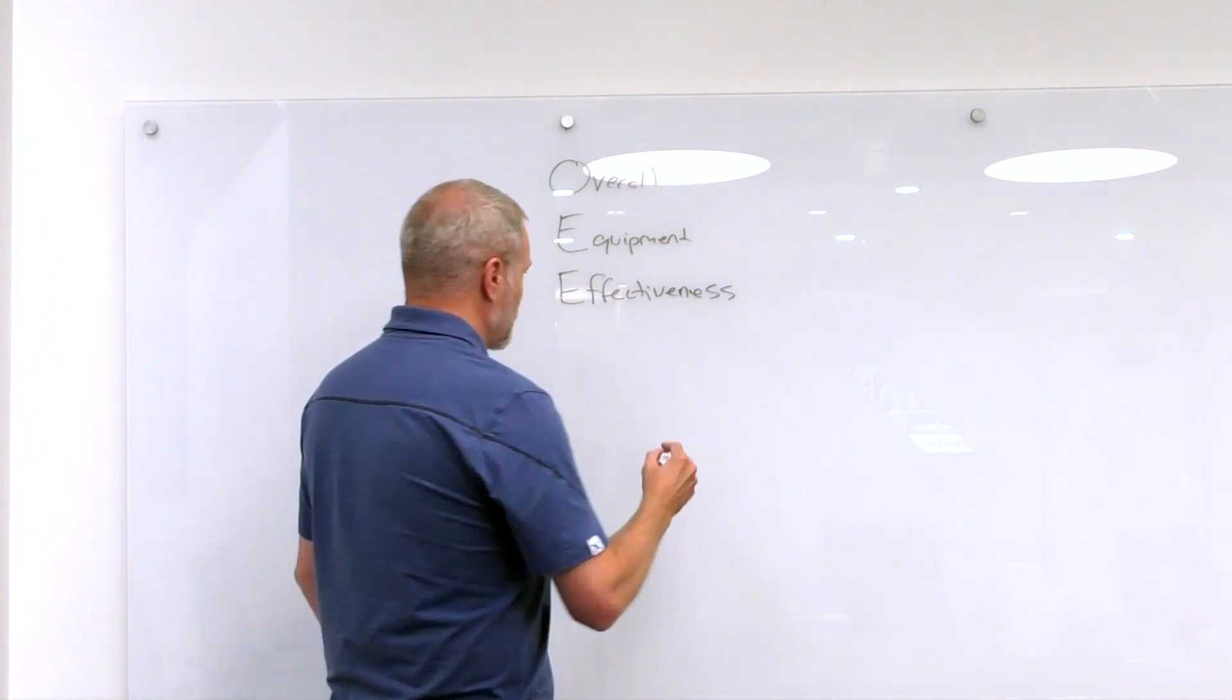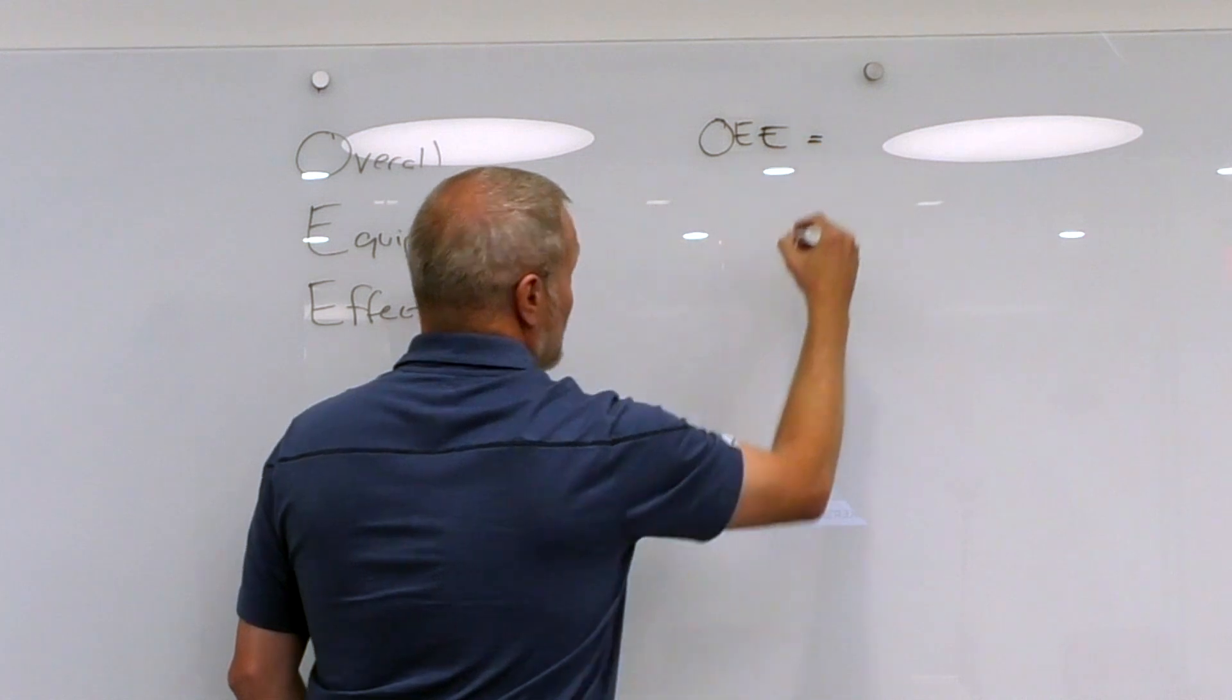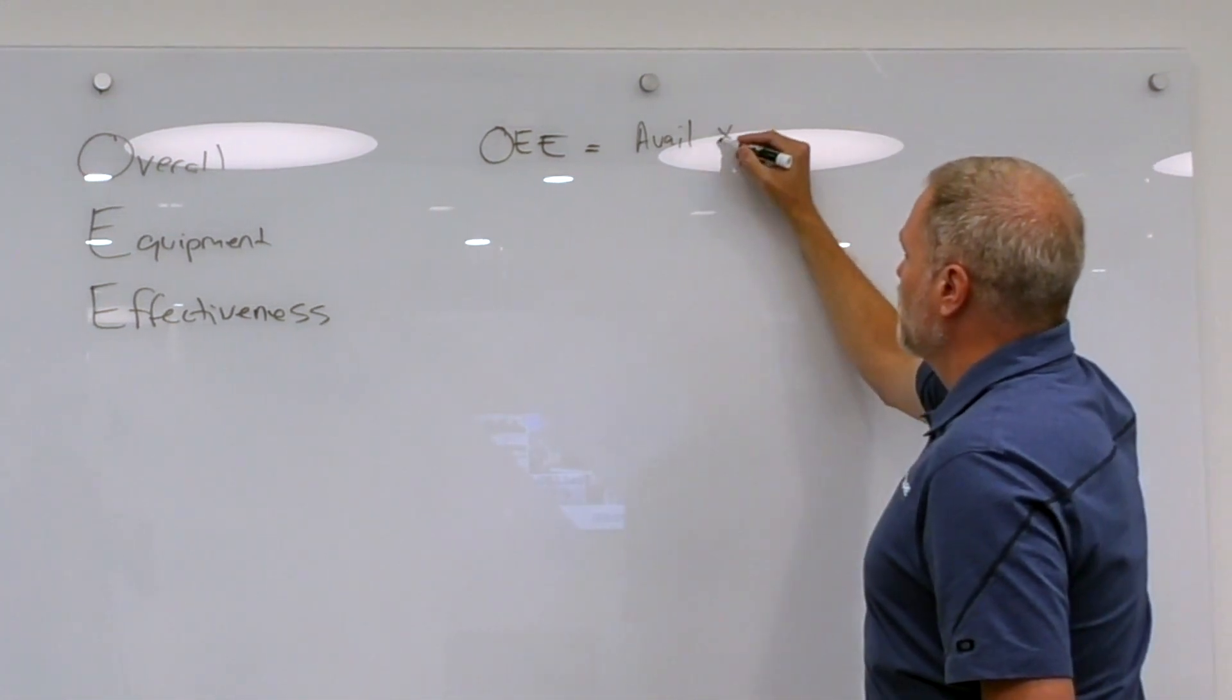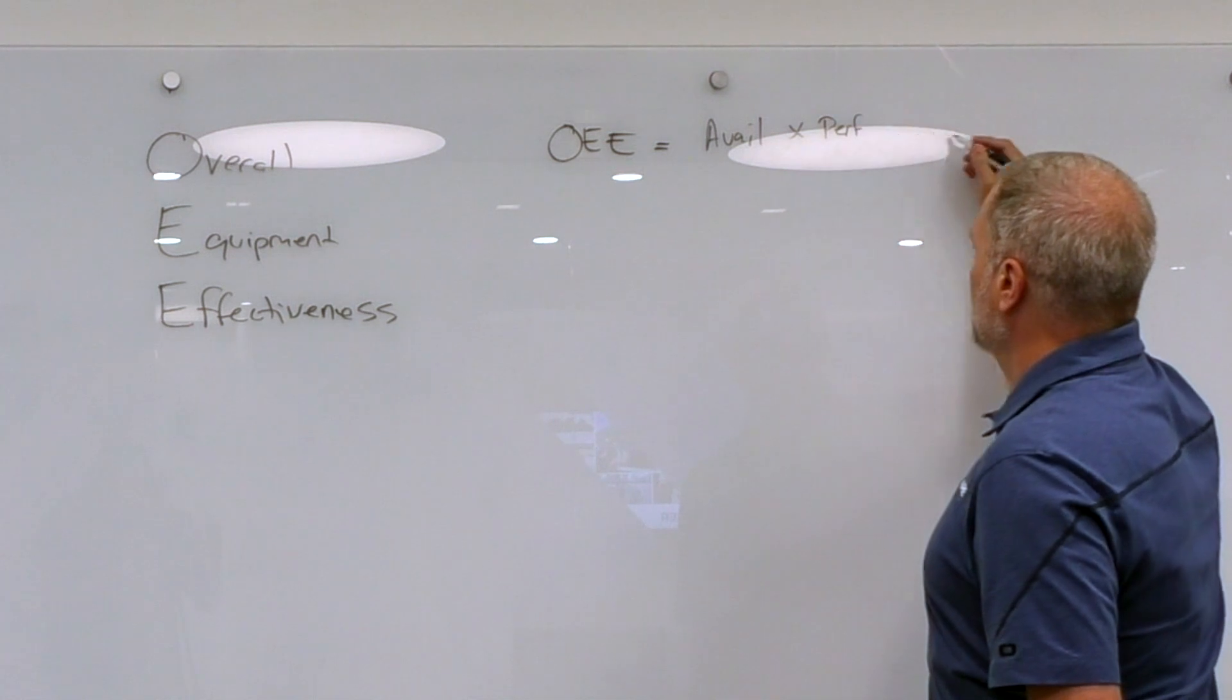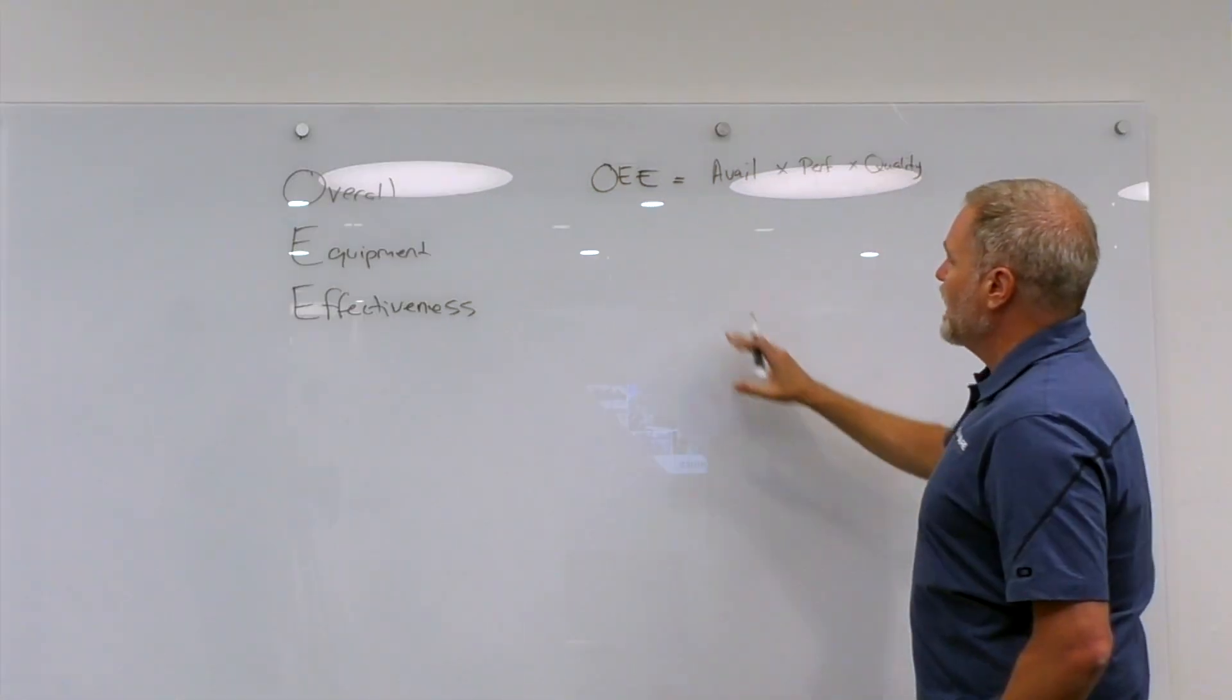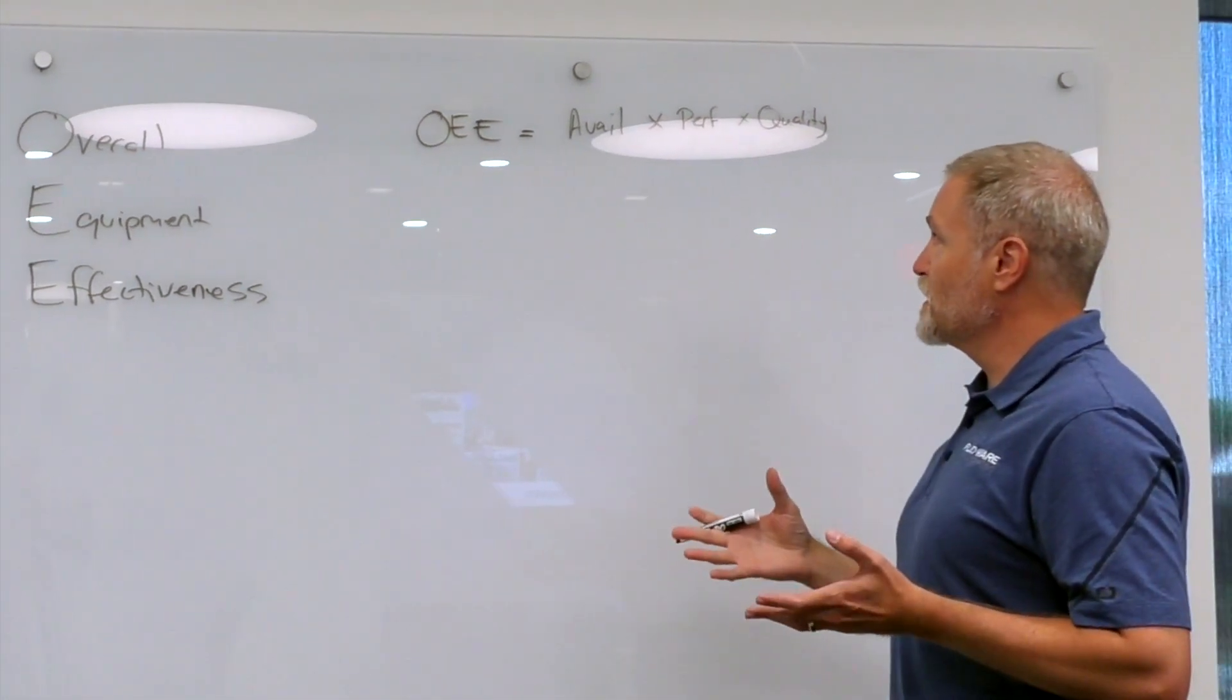OEE is made up of three pieces. OEE actually equals a metric called availability, and we ultimately multiply that by another metric known as performance, and we ultimately multiply that by a third metric known as quality. The idea of combining these three metrics is that it provides a better, more holistic view of your machine or your process.